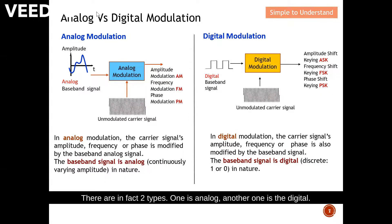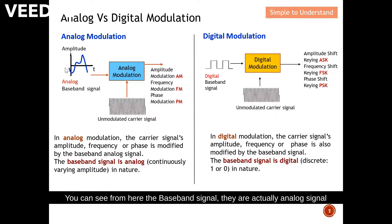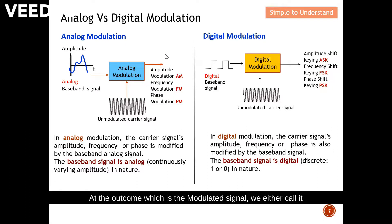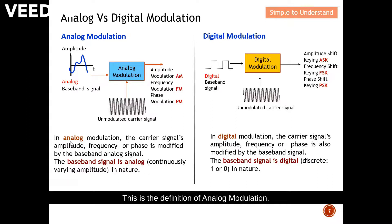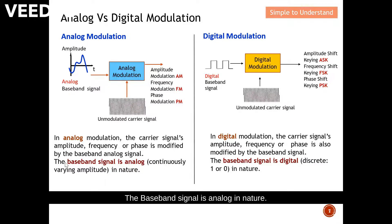There are two types: one is analog, the other is digital. On the left is analog modulation — the baseband signal is an analog signal fed into analog modulation. At the output, the modulated signal is called either Amplitude Modulation, Frequency Modulation, or Phase Modulation. In analog modulation, the carrier signal's amplitude, frequency, or phase is modified by the baseband analog signal.